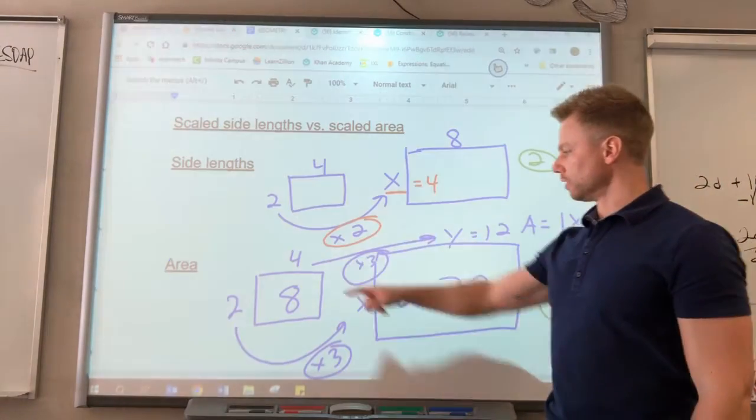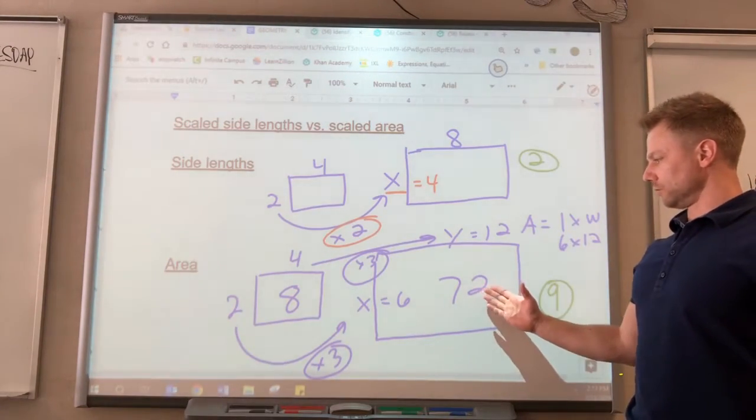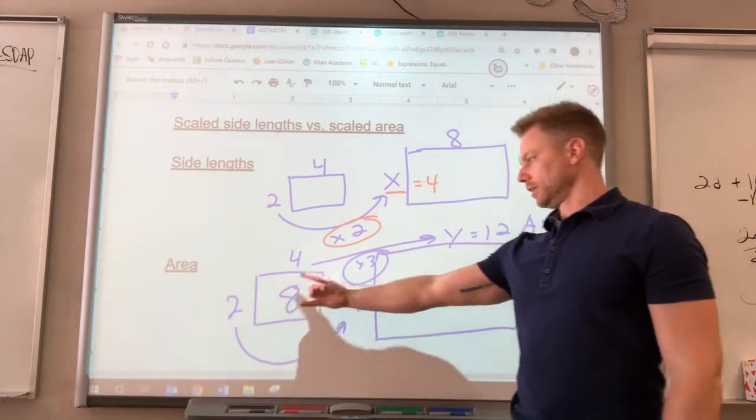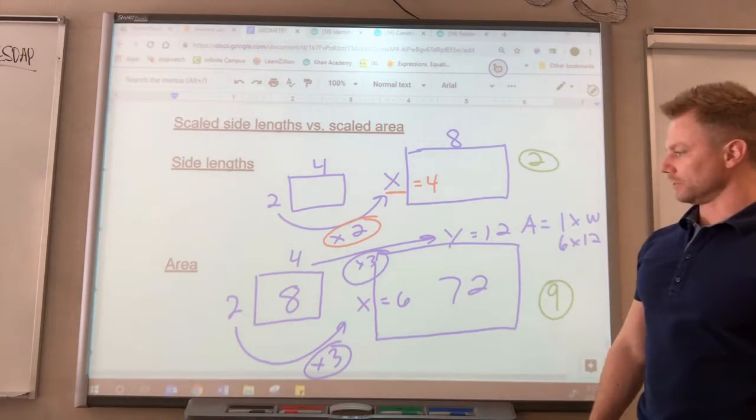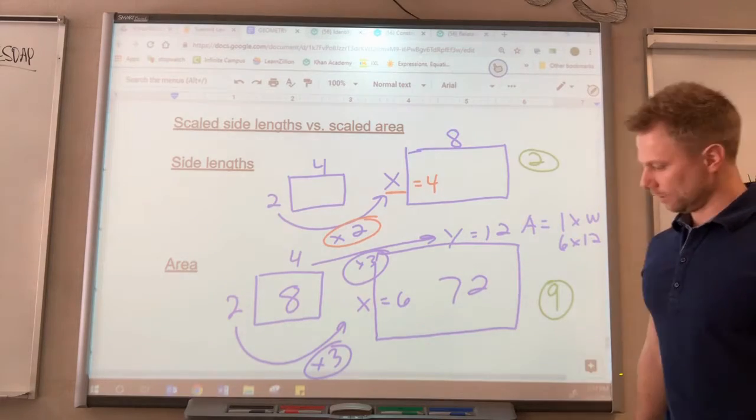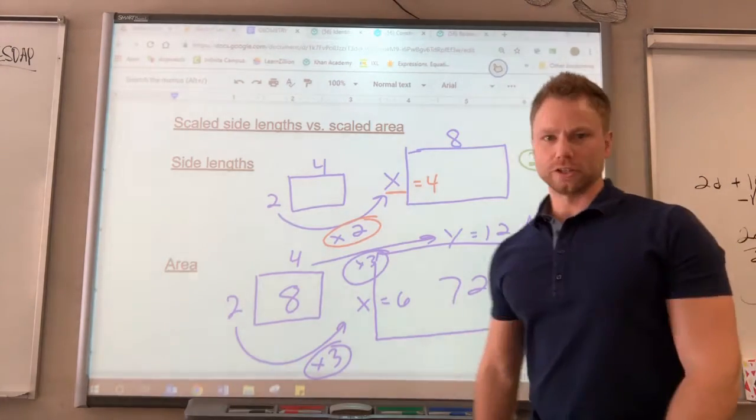And if you're working backwards, you would also have to divide it twice to figure out what this area was, because again, it's length and width. Let's take a look at the practice.